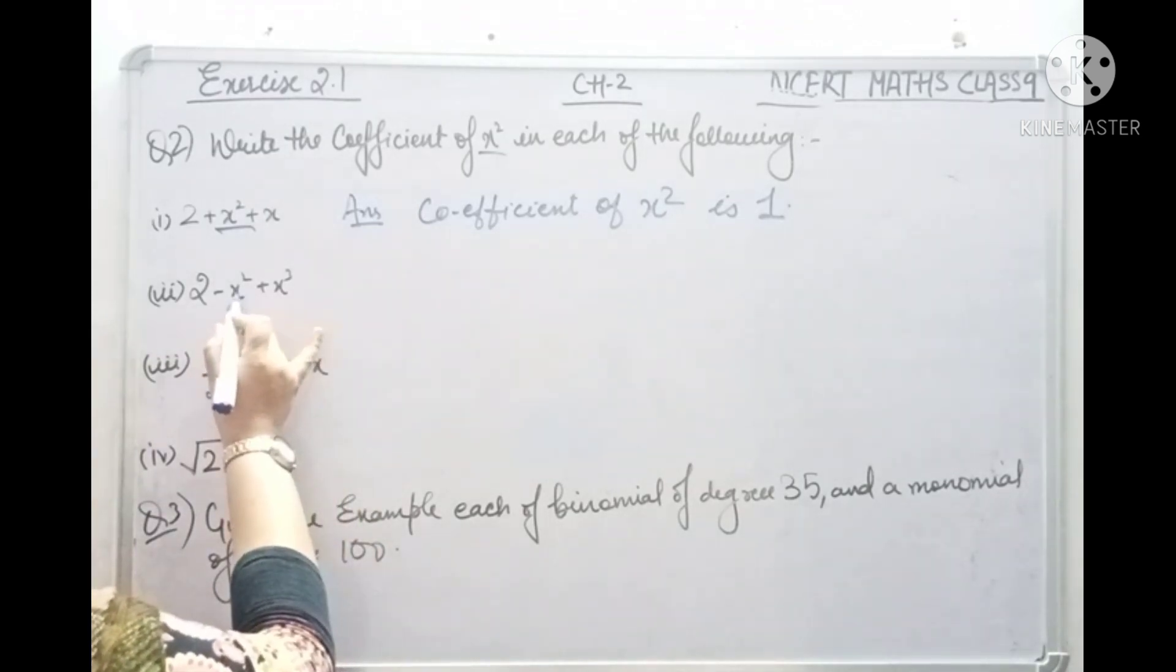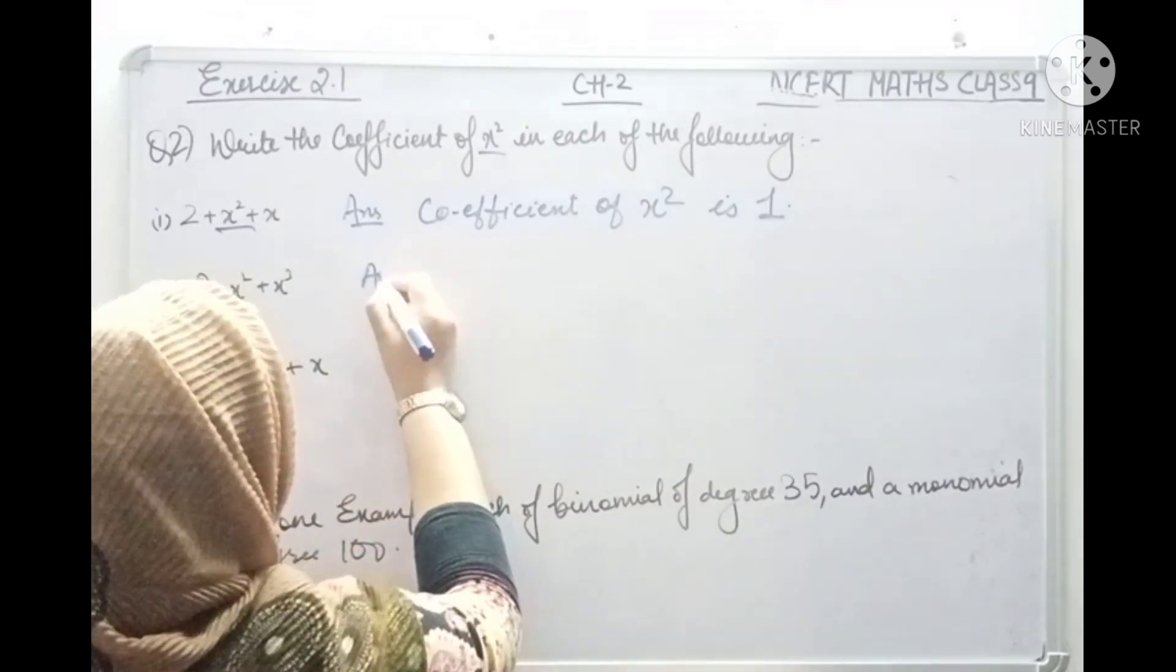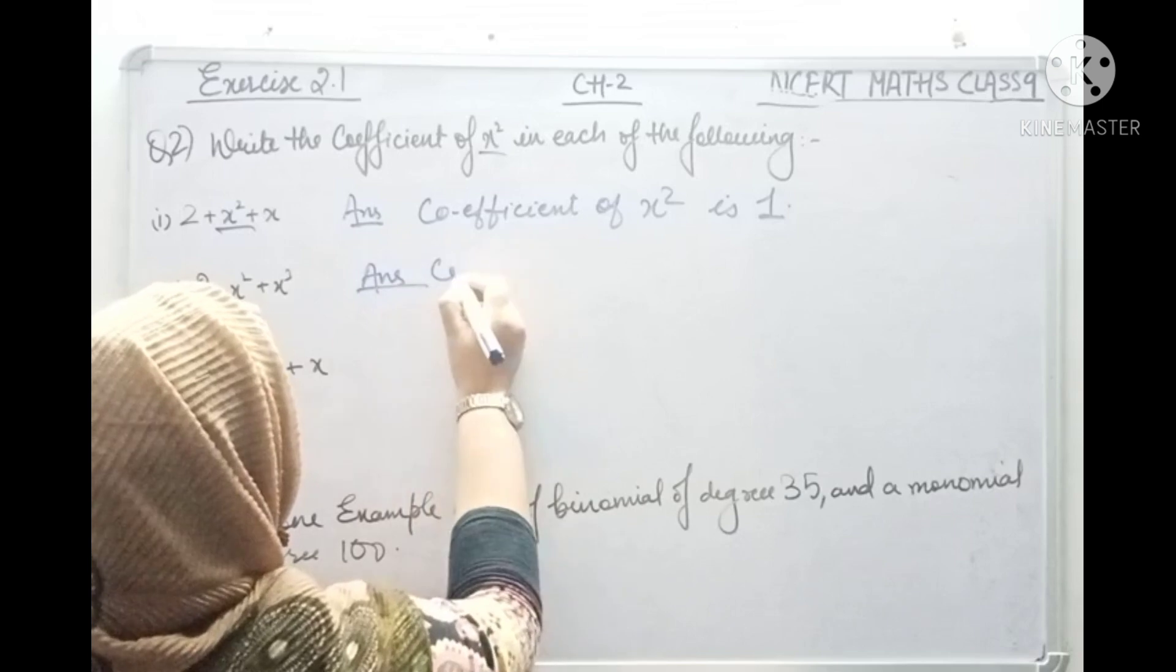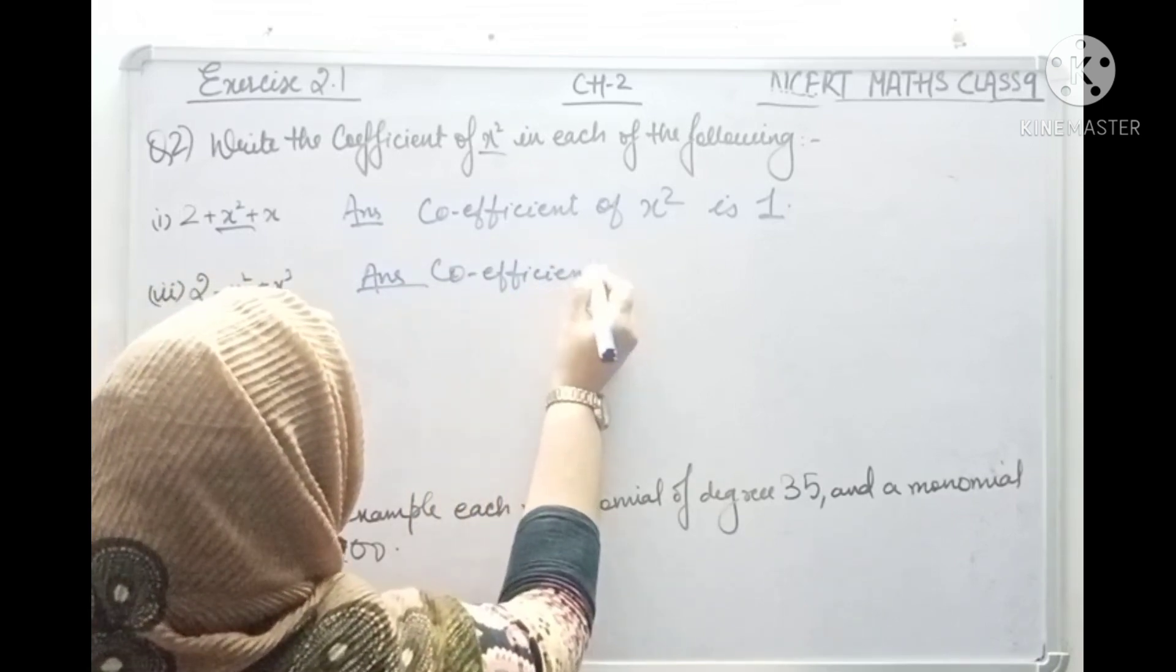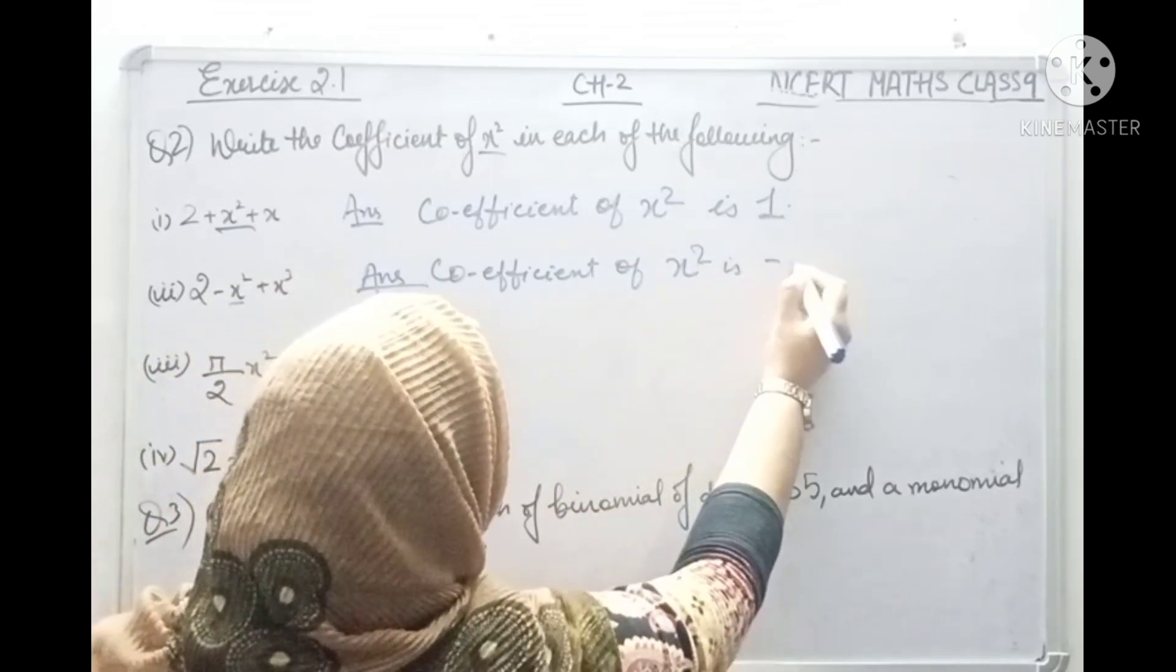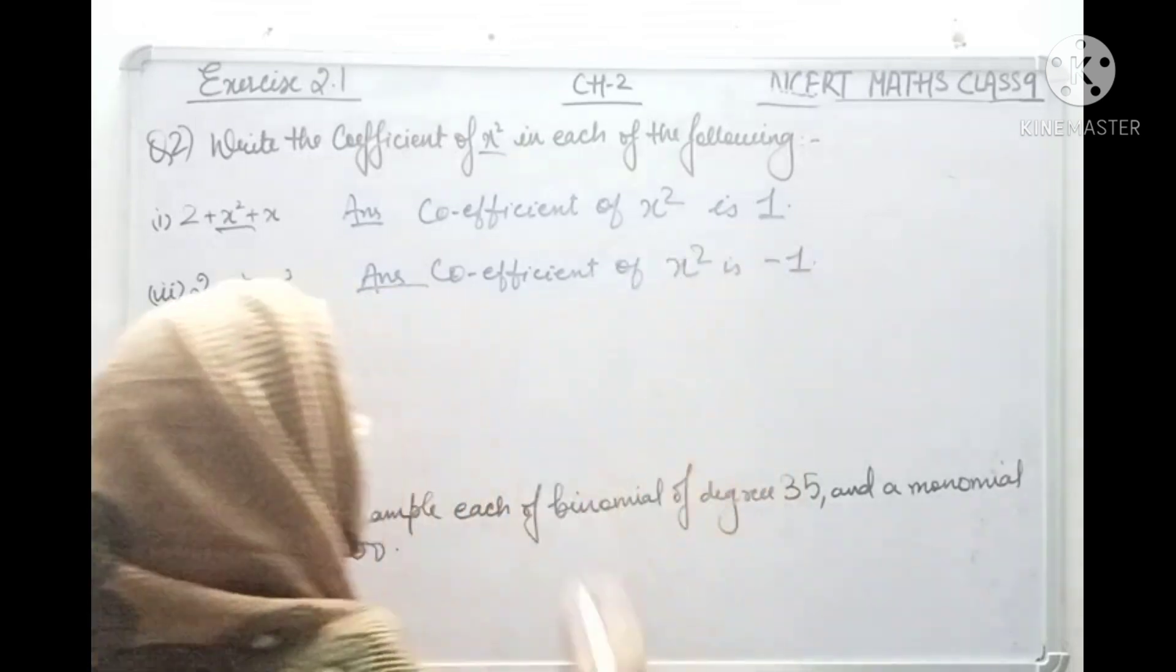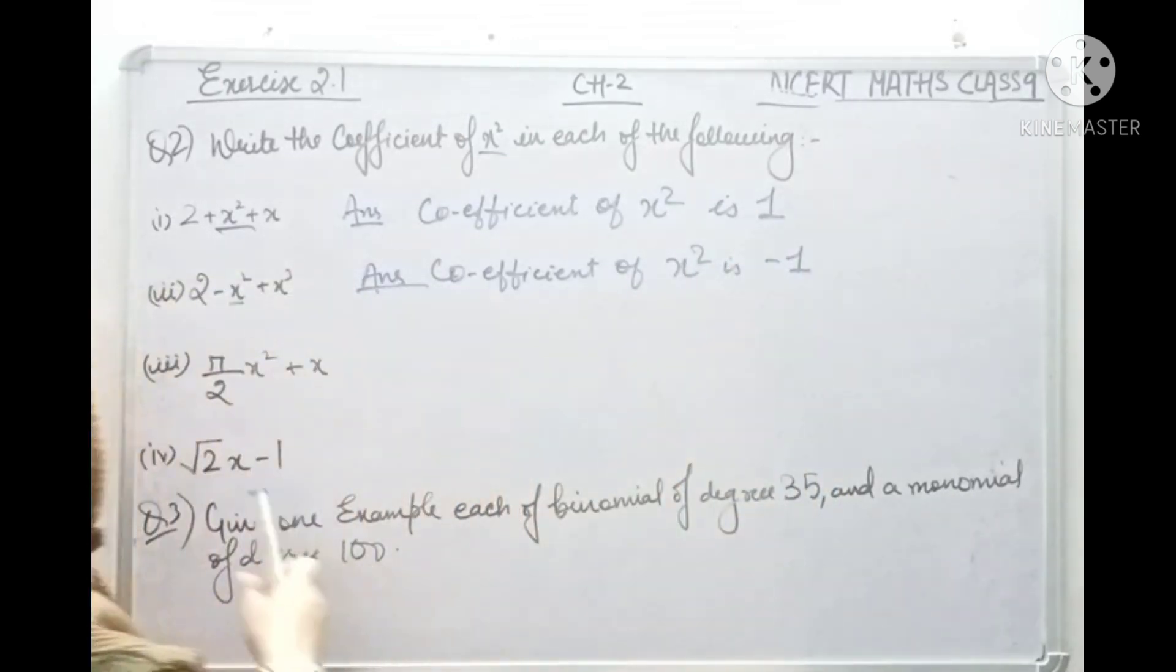Here, coefficient of x square is minus 1. Minus x square is multiplied by minus 1. So the coefficient of x square is minus 1.